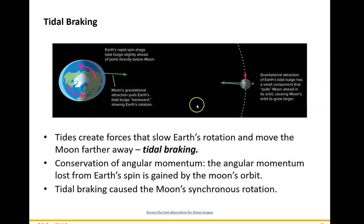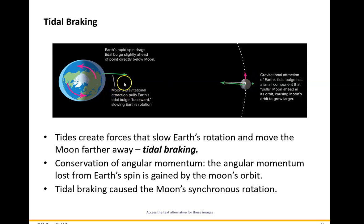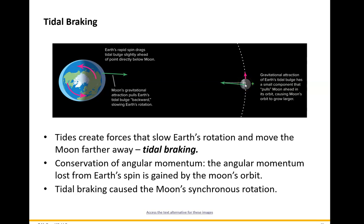We've also noticed, only from placing reflectors on the moon and knowing exactly how far away the moon is — and we've been measuring this very accurately for the last 50 years or so — that the moon is actually getting a little bit further from the Earth. What's going on is what's called tidal braking. The tides are actually slowing the Earth's rotation down a little bit.